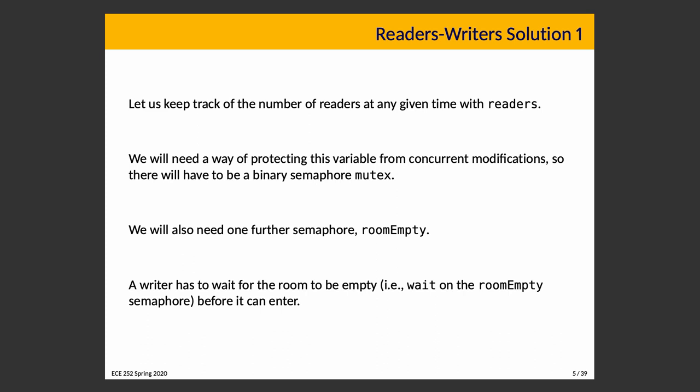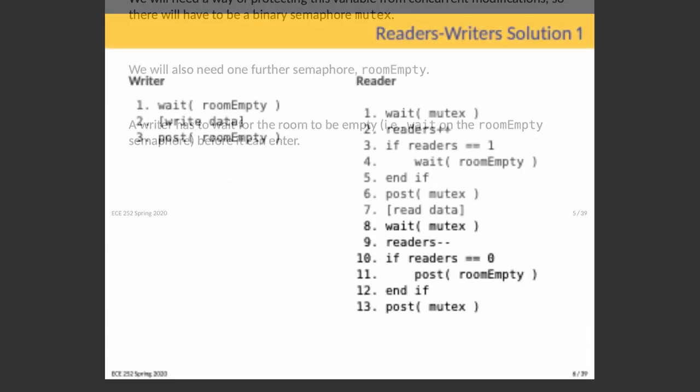Why is the semaphore called 'room_empty'? The goal of naming conventions like this is that when we say it out loud in natural language, it gives us a clear indication of what condition we're waiting for. If we are a writer and want to wait for there to be no threads in the critical section, we say 'wait for room_empty' — that has a straightforward meaning. We're waiting for all threads to have exited the critical section.